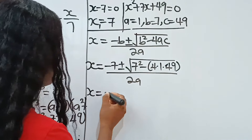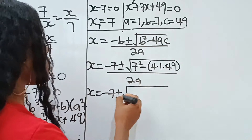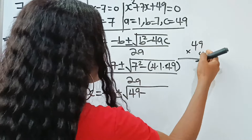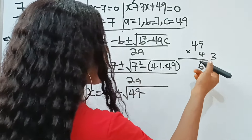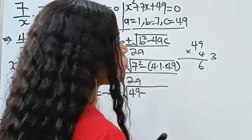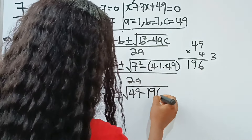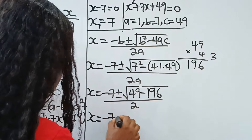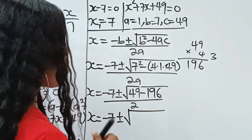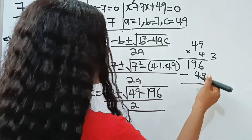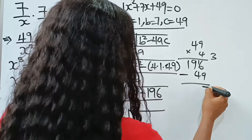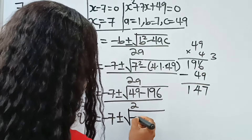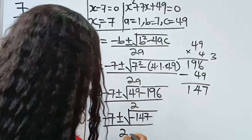Continuing: x equals negative 7 plus or minus the square root of 49 minus 4 times 49. Now 4 times 49: 9 times 4 is 36, write 6 carry 3; 4 times 4 is 16, plus 3 is 19, so we get 196. So we have 49 minus 196, which equals negative 147, all divided by 2.